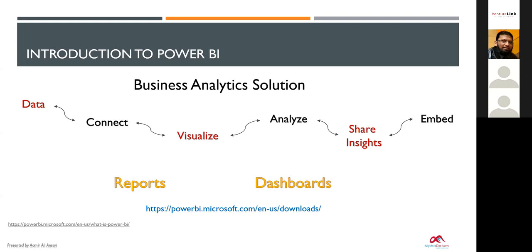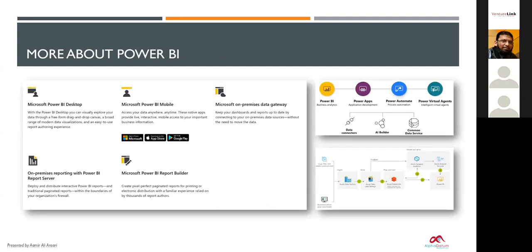Once you start sharing your reports, you need an online account. Power BI Desktop is the application where you design and develop your reports. Power BI Mobile is a mobile app available on app stores for viewing published reports only — not for developing. When you want to connect local data to cloud, you need the Power BI on-premises data gateway. Other products include Power BI Report Server and Power BI Reports.